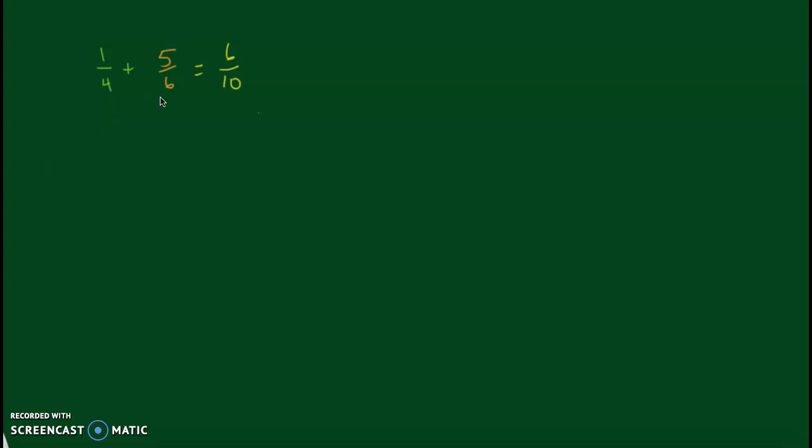We're going to start with this problem, 1 fourth plus 5 sixths. The person who solved this problem said the answer was 6 tenths. Your job is to explain how you know that Josie's answer does not make sense. The common answer that most of my fifth graders give is that you can't add the denominators together. The person just added the numerators together and added the denominators together. And while that does explain this answer is not correct, I want you to think about it in a different way.